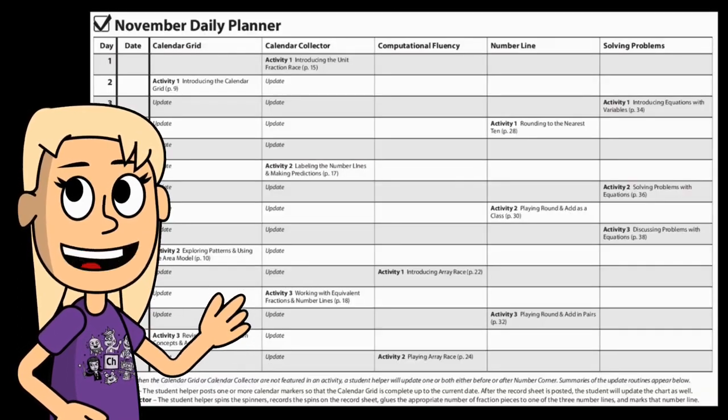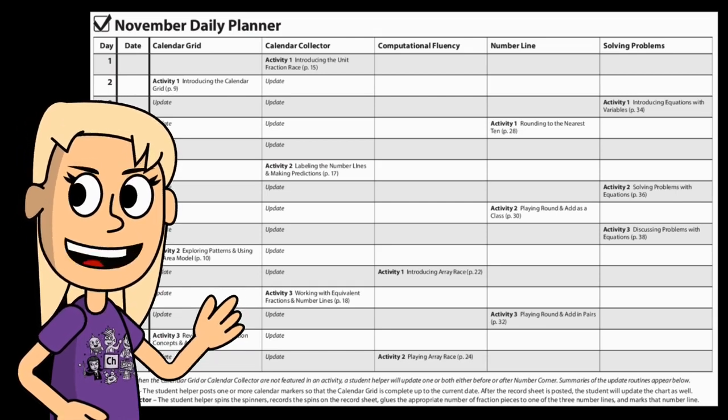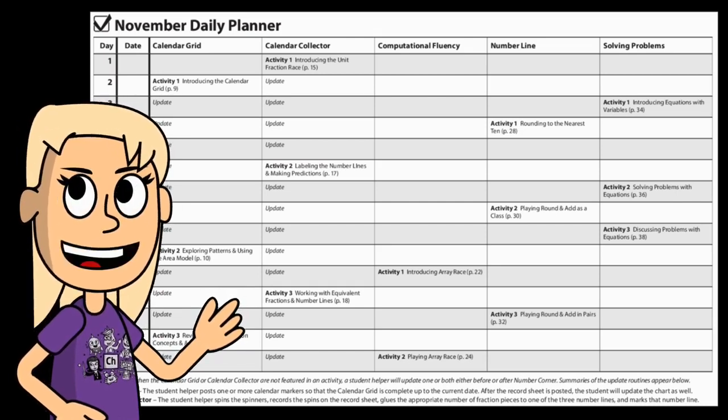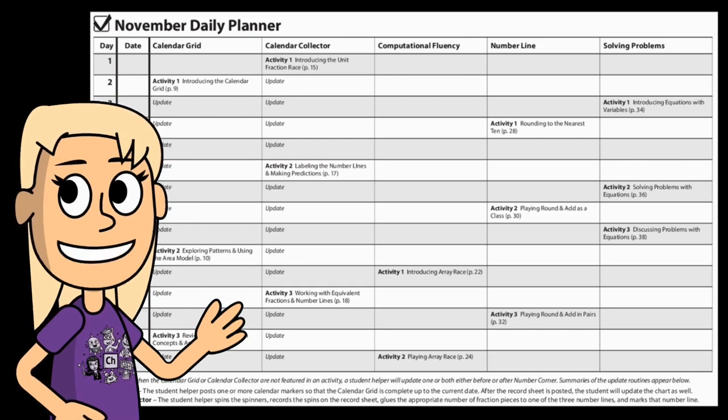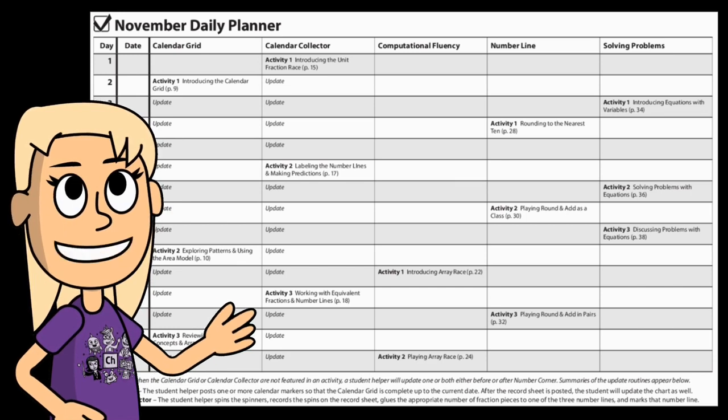On the days that there are activities, focus on the activity more than the calendar. Activities will take a little longer than 15 minutes, so you should plan the 20 to 30 minutes for that day's number corner.